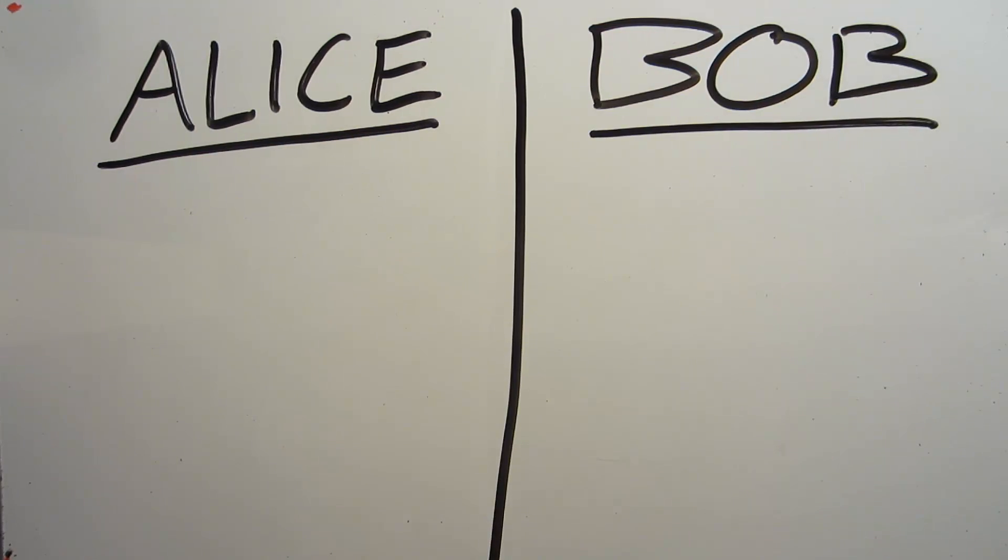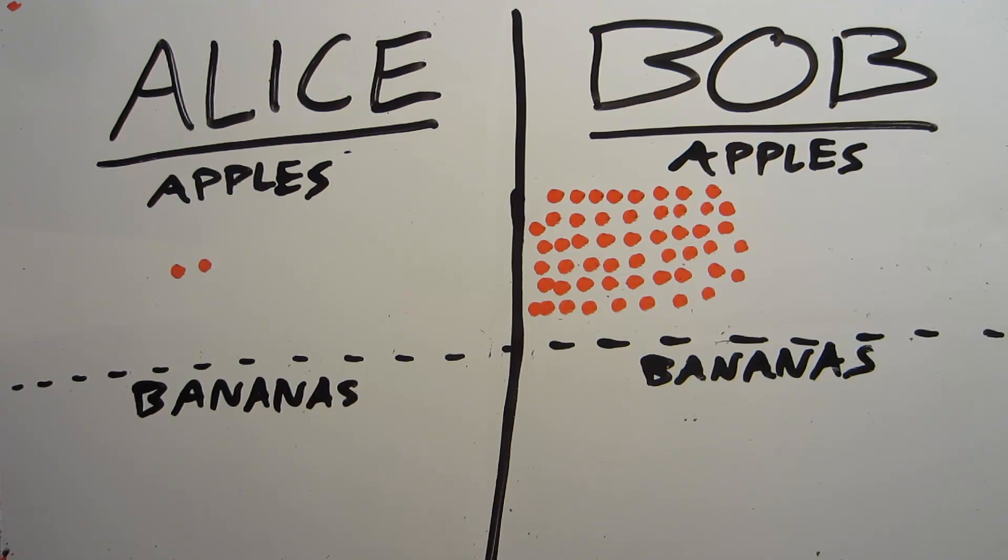Now Alice believes that she's the better fruit vendor, and she points to Bob's 50 bad apples, whereas she only has two.